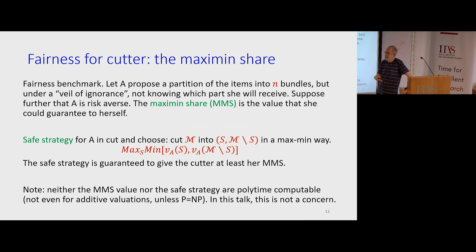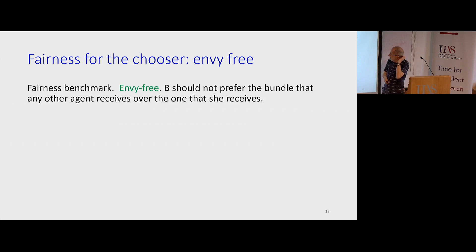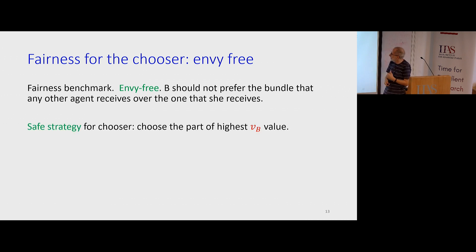The cutter can ensure to herself the maximin share — a certain minimum value she'll get at the end. She might eventually get more, but that's a minimum she can ensure. In this respect the protocol is fair to the cutter because it offers her this guarantee. In what sense is the protocol fair to the chooser? This is the notion of envy-freeness: looking at what I got and comparing it to what each other agent got, I think I got the best bundle — nobody else got a better bundle than I did.